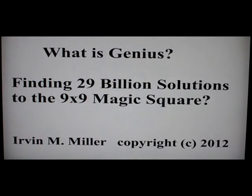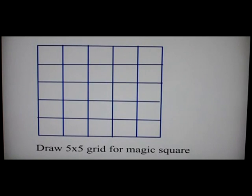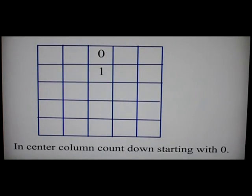I'll show you how to create 29 billion solutions. We start by using a 5 by 5 magic square so we can see the patterns and apply them to the 9 by 9 square.